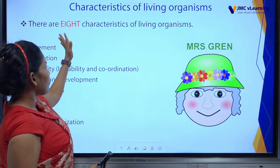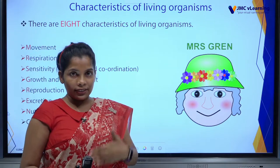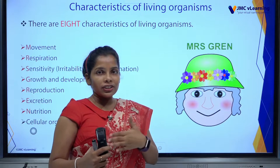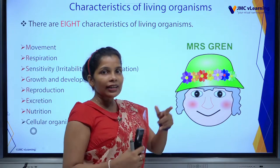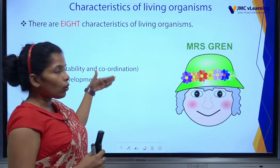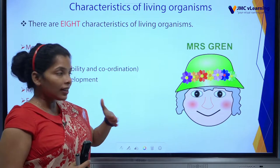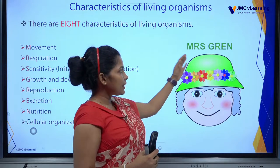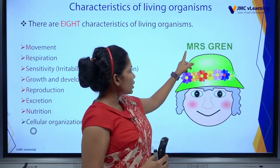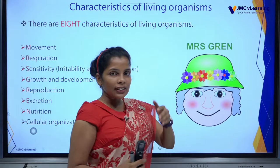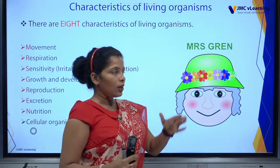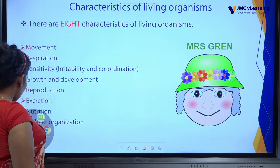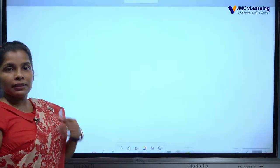There are eight characteristics of living organisms. There is a word that helps you remember those characteristics — the word is 'Mrs. Grain.' Each letter represents one characteristic. So now I am going to discuss Mrs. Grain one by one.